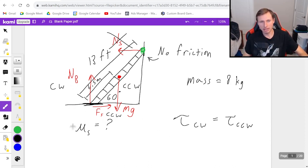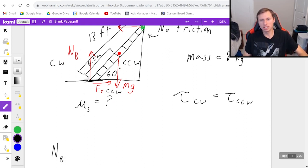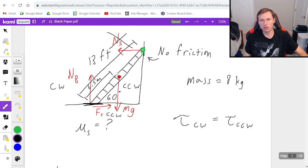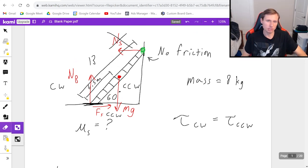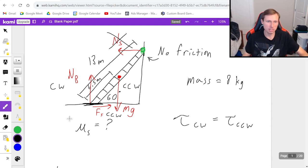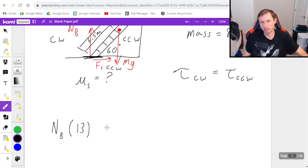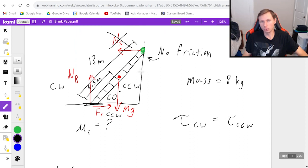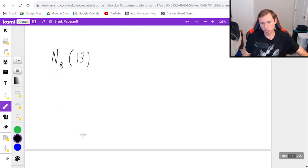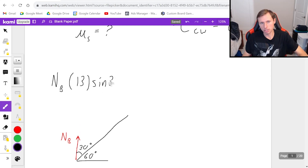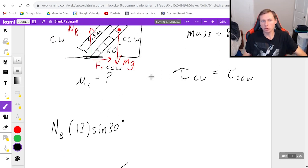The clockwise torque is going to be NB, which is the force, times the distance. This distance is the full 13 meters. And then the sine theta part. Here's my ladder, here's my normal force NB. This angle is already 60 degrees, which means that this angle, which is the one I need, is 30 degrees. So it's going to be the sine of 30. That's it for my clockwise torques.